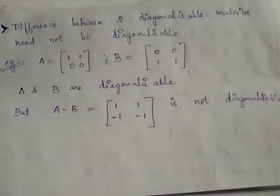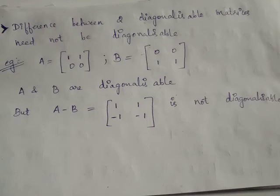This is the same case for the sum and product of diagonalizable matrices. In certain examples we may find that the sum of diagonalizable matrices is diagonalizable and the product of diagonalizable matrices is diagonalizable.